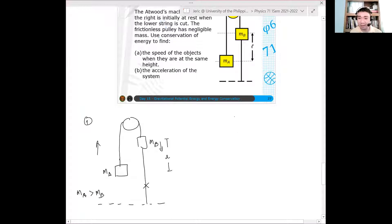For the meantime, let's assume that MA is greater than MB. So MA will go up, MB will go down. Now at the second state, the system will be—I have a pulley again. What will happen is they're at equal position. So let's say this is L, it's still L. This is the ground.